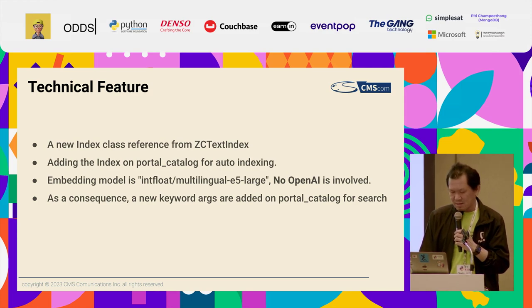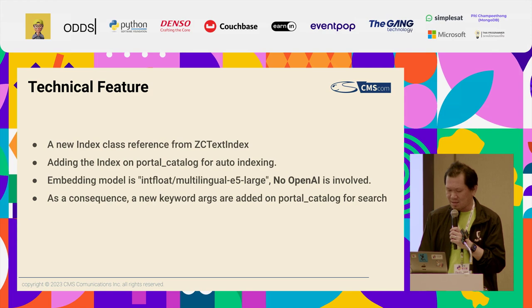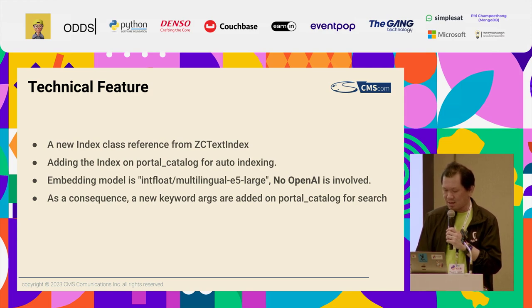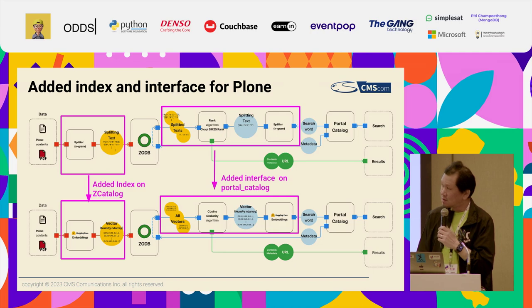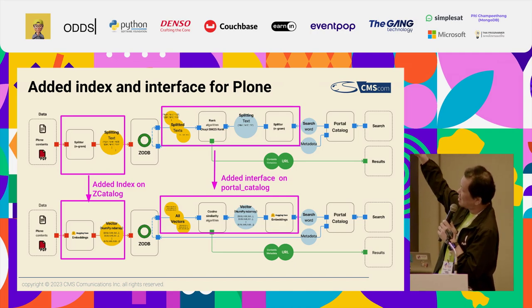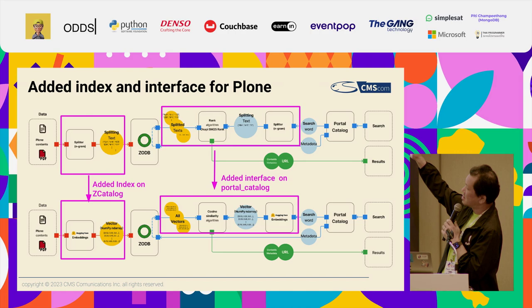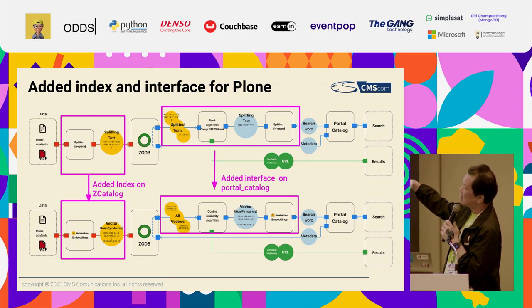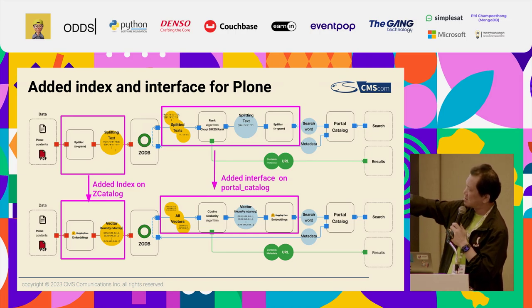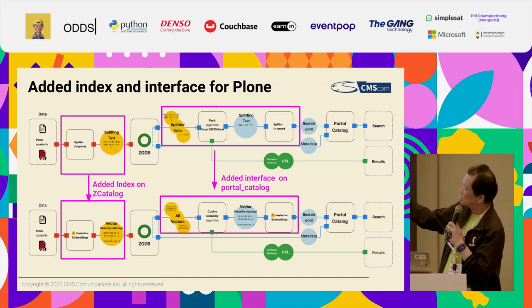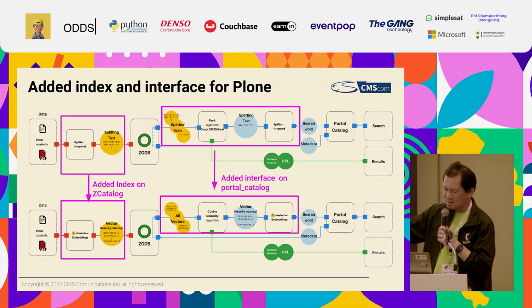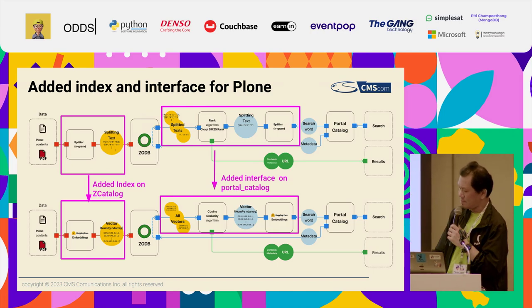New keyword eggs are added to the portal catalog for search. The upper side is the normal PROM — normal ZOP indexing and searching system. I made replacements to two things: the catalog and the searching system.